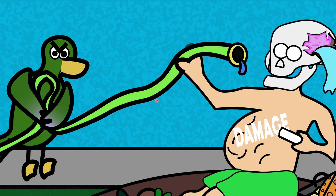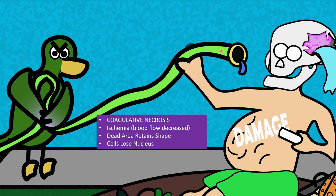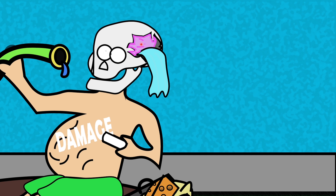Next we have coagulative necrosis. Here we have a duck pinching off a hose — Nick's head is just a skull and there's no water coming out. Coagulative necrosis involves ischemic tissue, meaning that the blood supply has been cut off. The duck makes a quack sound — "coagulative" might be a stretch, but it'll work. The pinched-off hose reminds us of ischemia. The skull helps us remember that tissue with coagulative necrosis actually retains its shape even after it's died off. Cells that undergo coagulative necrosis lose their nucleus.